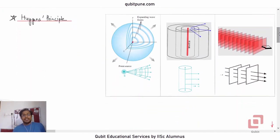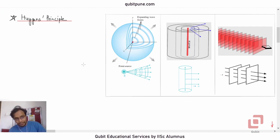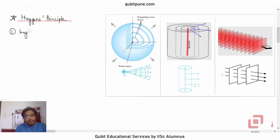What did Huygens tell? First of all, during his time, electromagnetic waves were not known. So Huygens assumed that light is a longitudinal wave — but he was wrong.